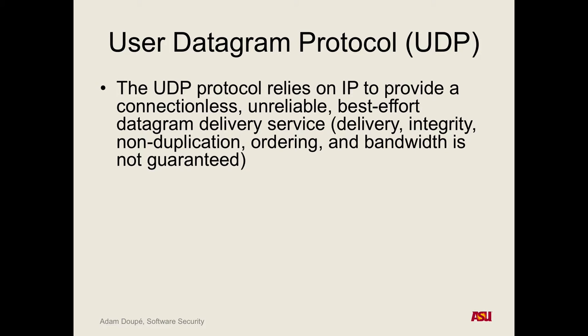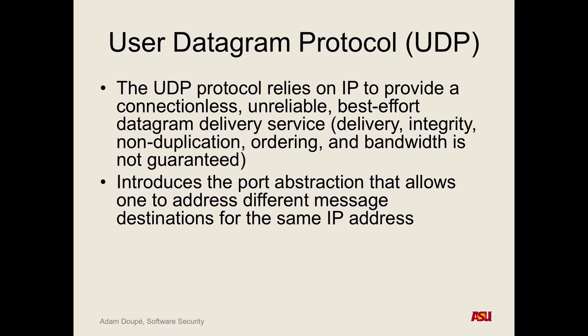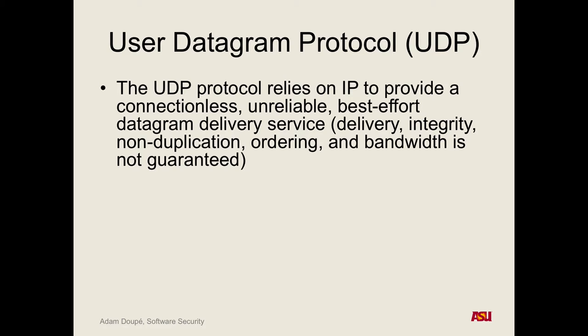Ordering: we can send one packet and then right afterwards send a second packet, and there's no guarantee they arrive in that order on the other side. Bandwidth: no guarantees about throughput either. So UDP kind of sounds like IP. That's why it's super simple. Why would a router duplicate a packet? Because it's broken — but that's the thing: UDP does not provide any guarantees against that. That's the key thing.